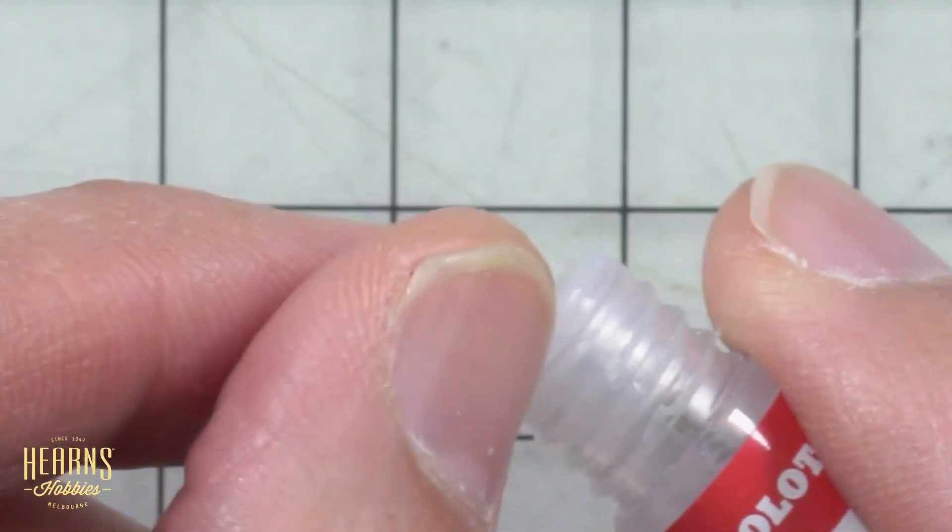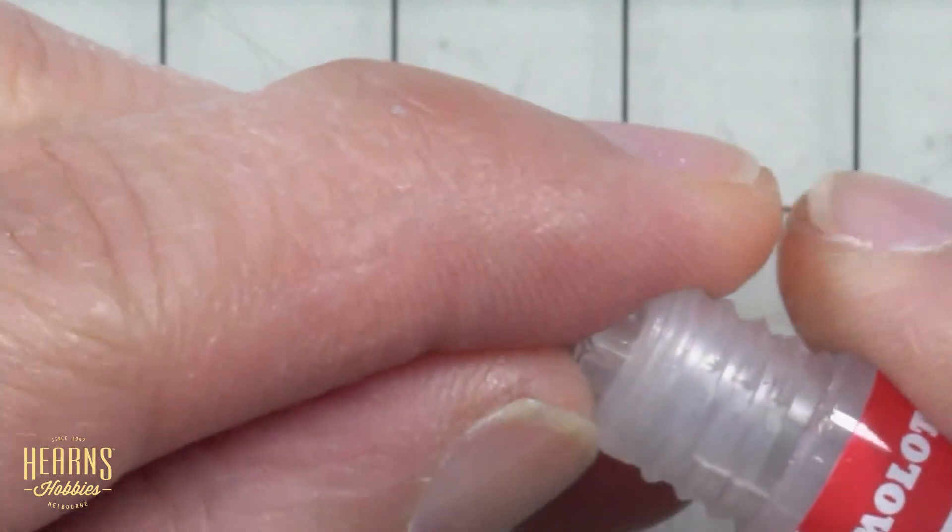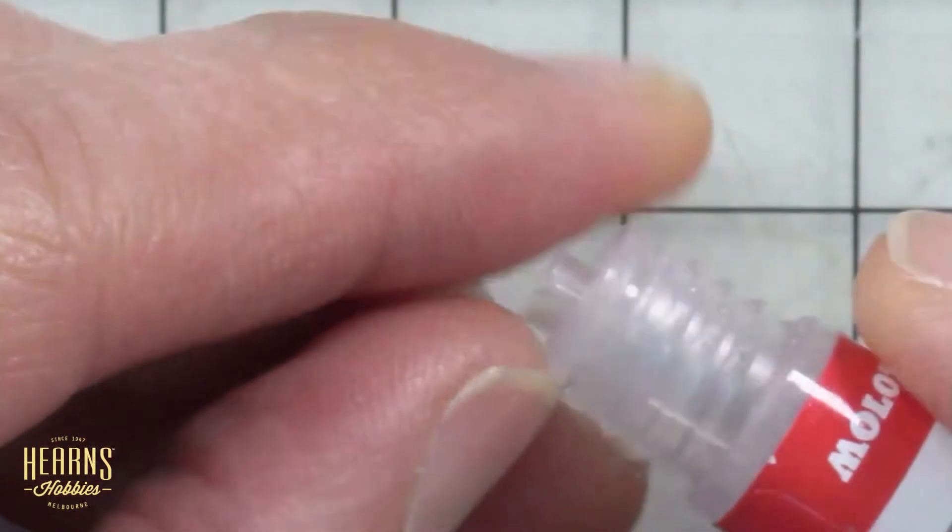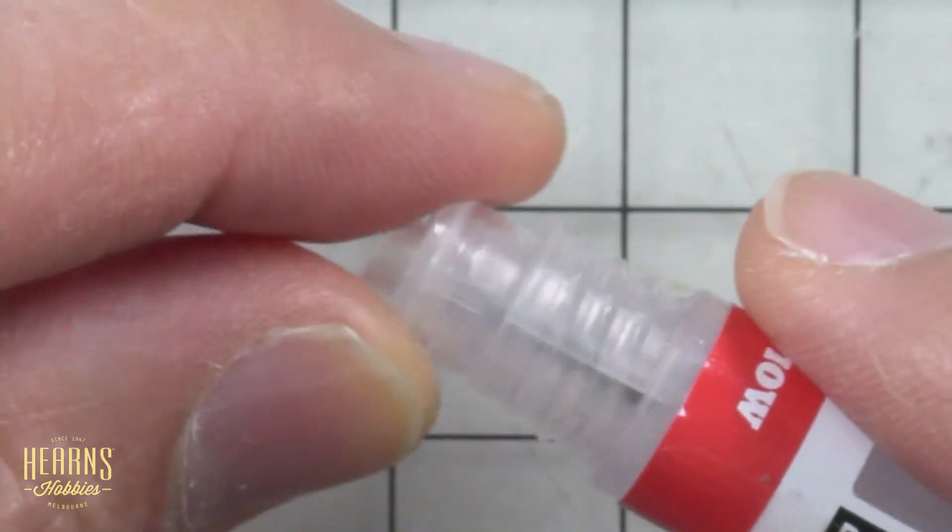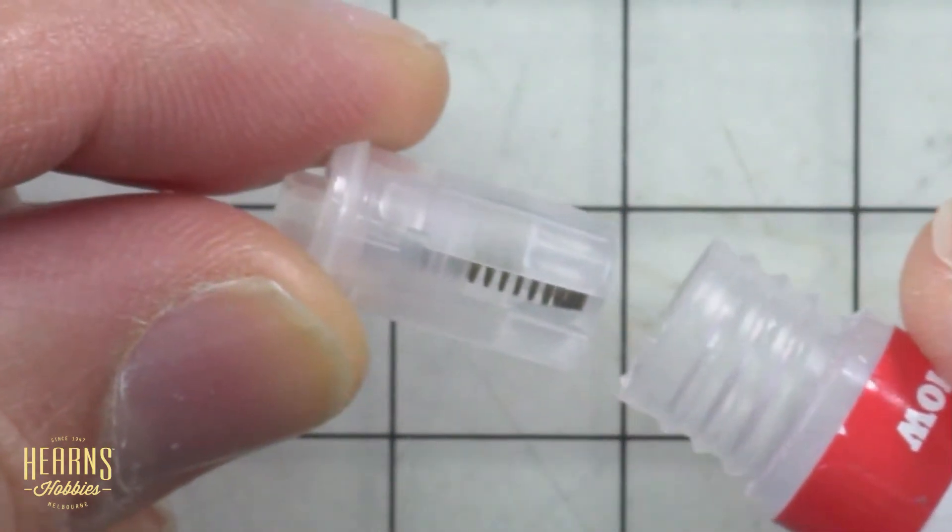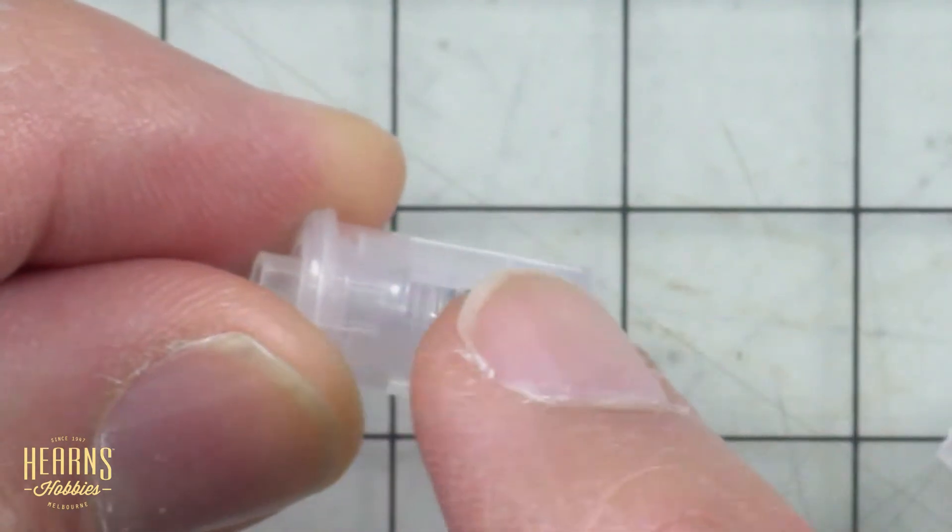Now what we need to do is undo this section here. There's a little edge of the cap, so I just put my fingernail in there and you'll see it's already starting to come loose. And there you go, this whole valve comes off. You can see the spring in there now.